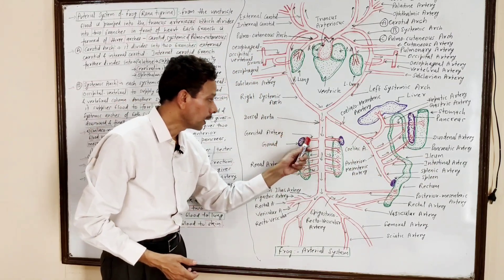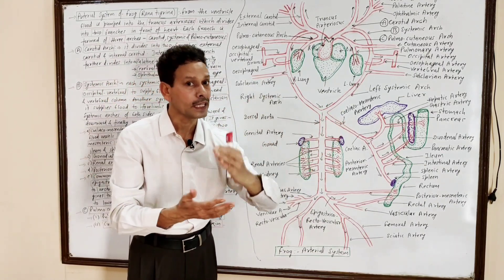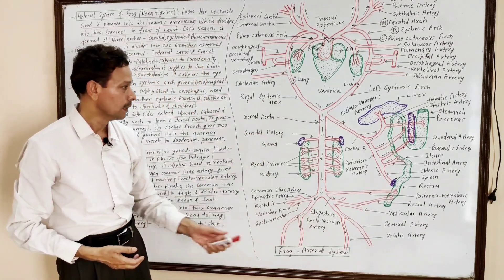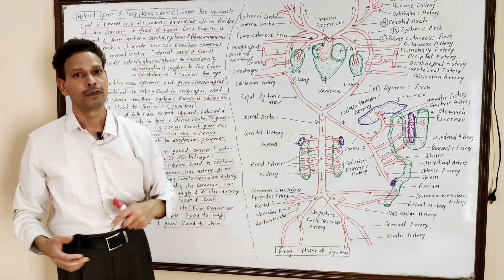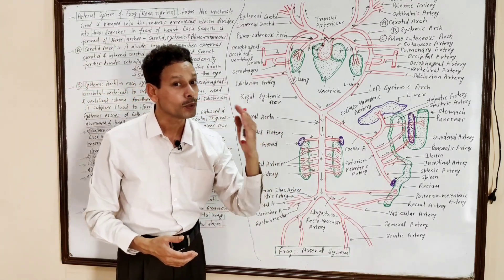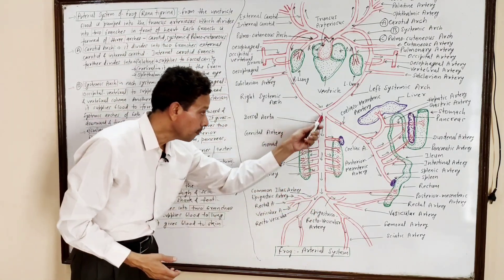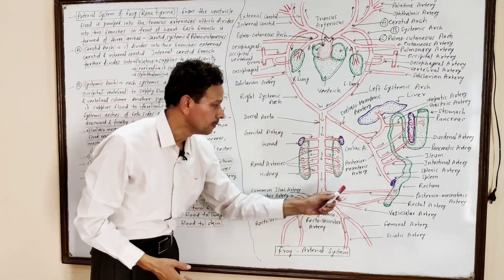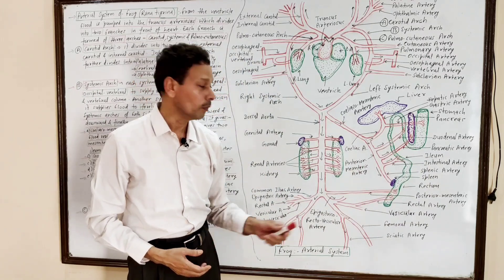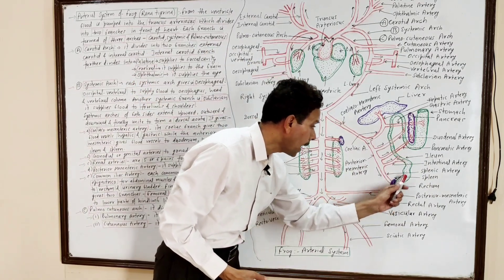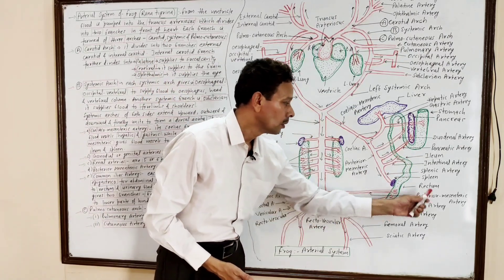The dorsal aorta gives one pair of genital arteries to the gonads, either testes or ovaries. In the intestinal region, the dorsal aorta gives five or six pairs of renal arteries to the kidneys. In the lower parts of the body, the dorsal aorta gives the posterior mesenteric artery, which carries blood to the large intestine and rectal region through the rectal artery.